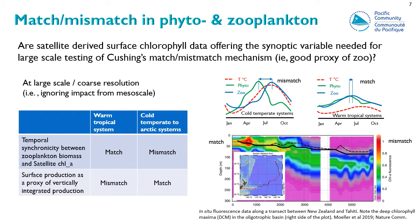The answer requires differentiating between cold and warm ecosystems. In warm ecosystems, zooplankton develops almost immediately after phytoplankton, so there is a very good match between phytoplankton and zooplankton variability. But in cold ecosystems, there is a delay between the peak of the phytoplankton bloom and the development of zooplankton, and this delay increases with decreasing water temperature.